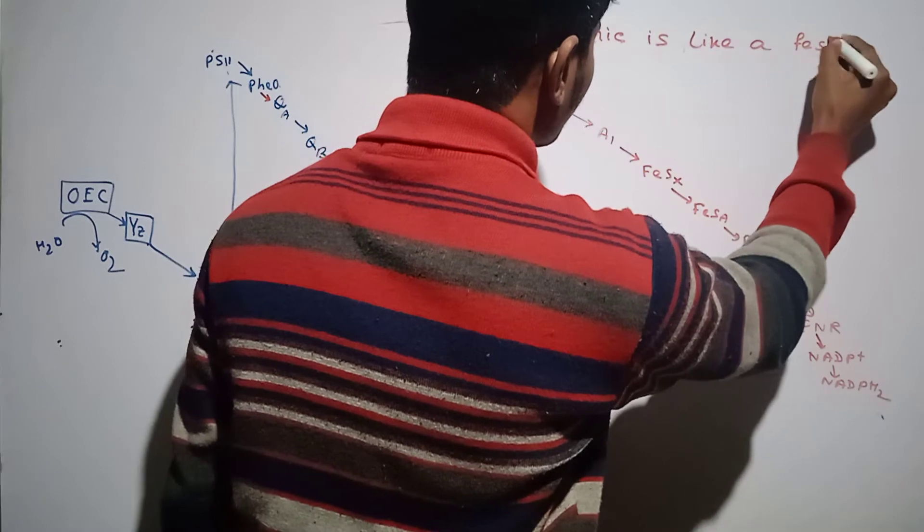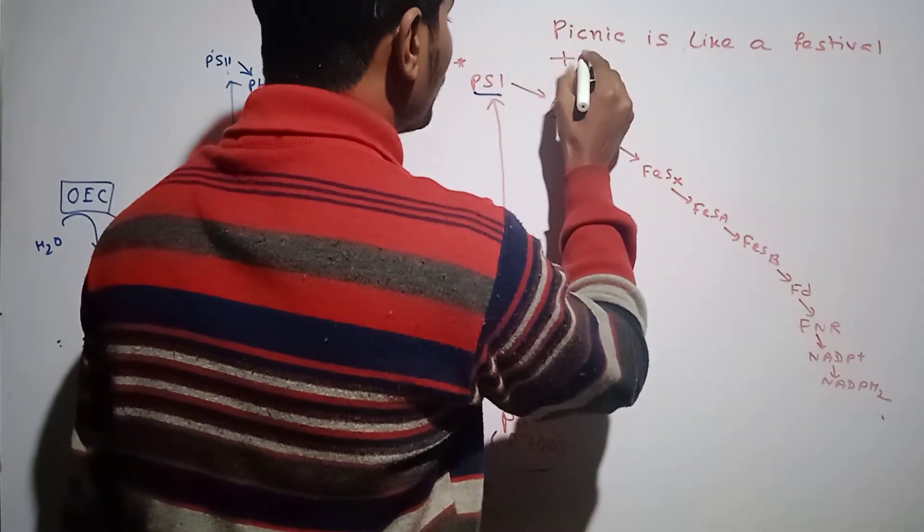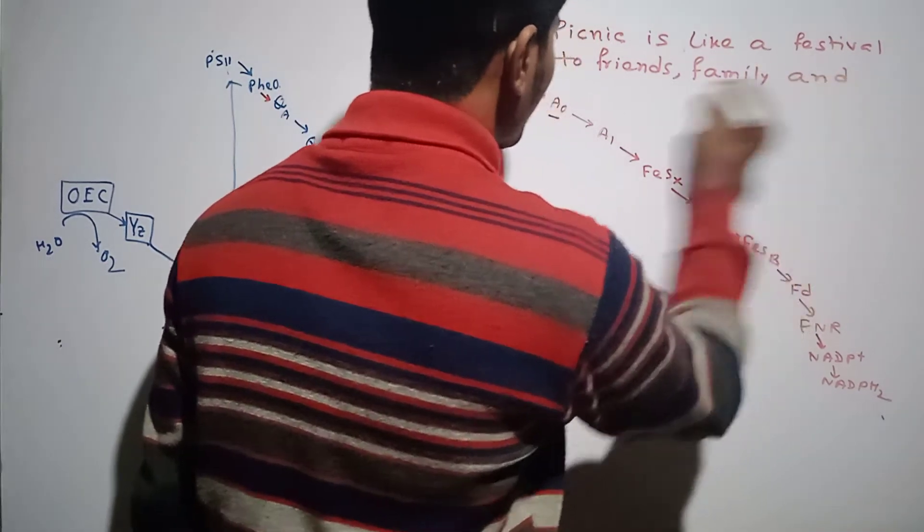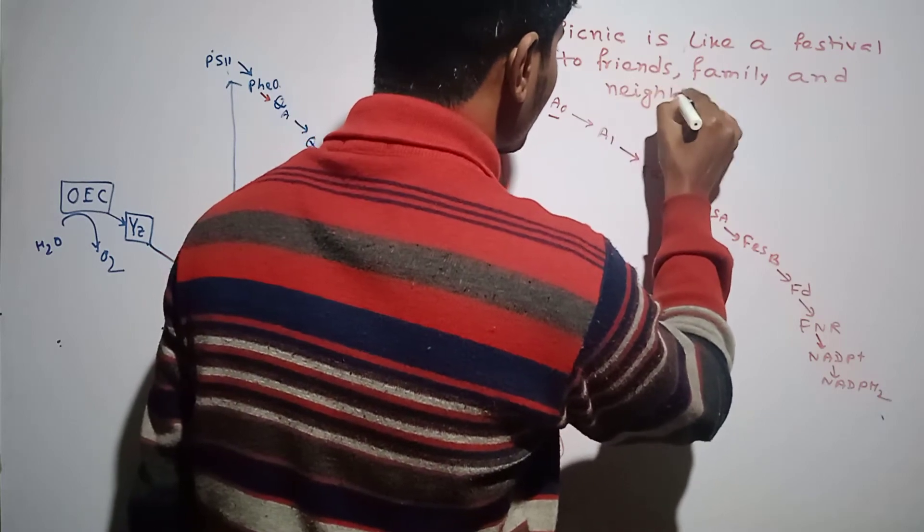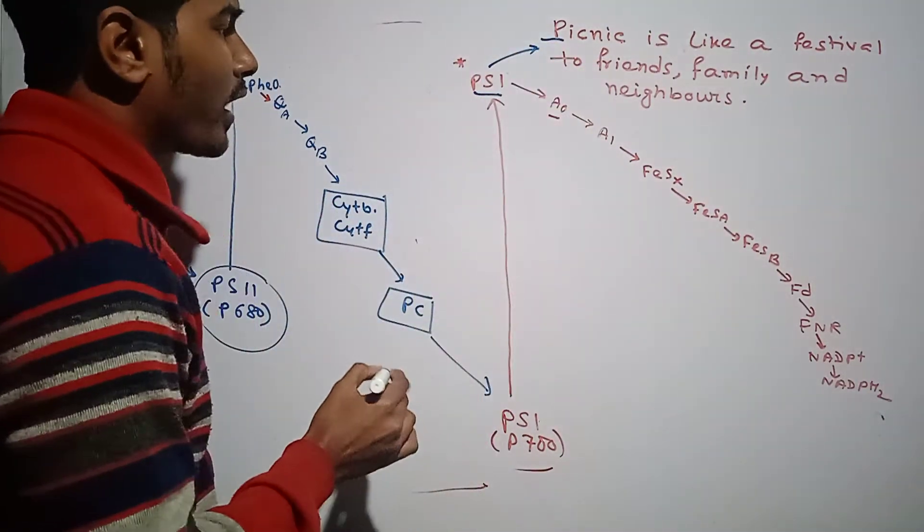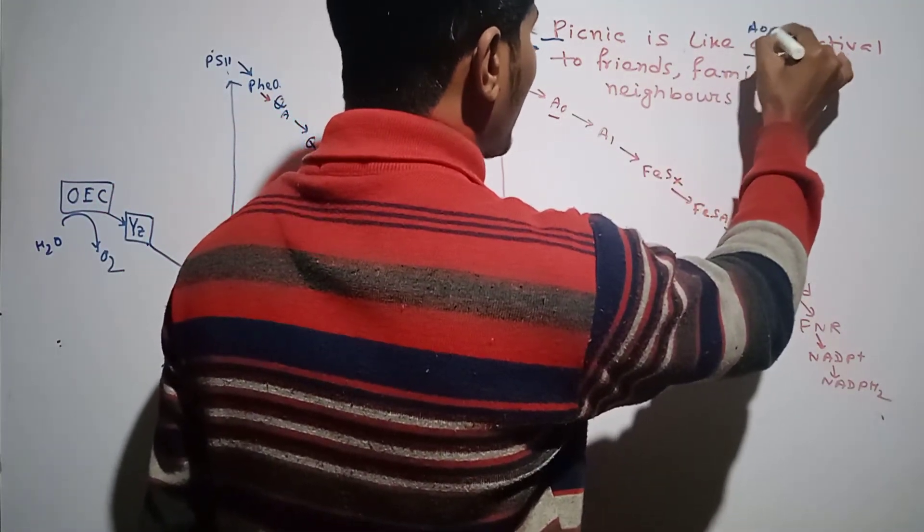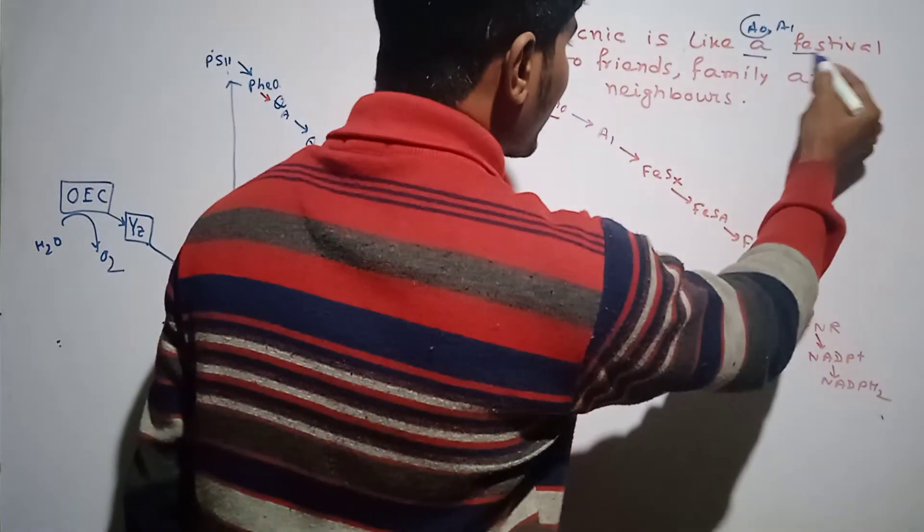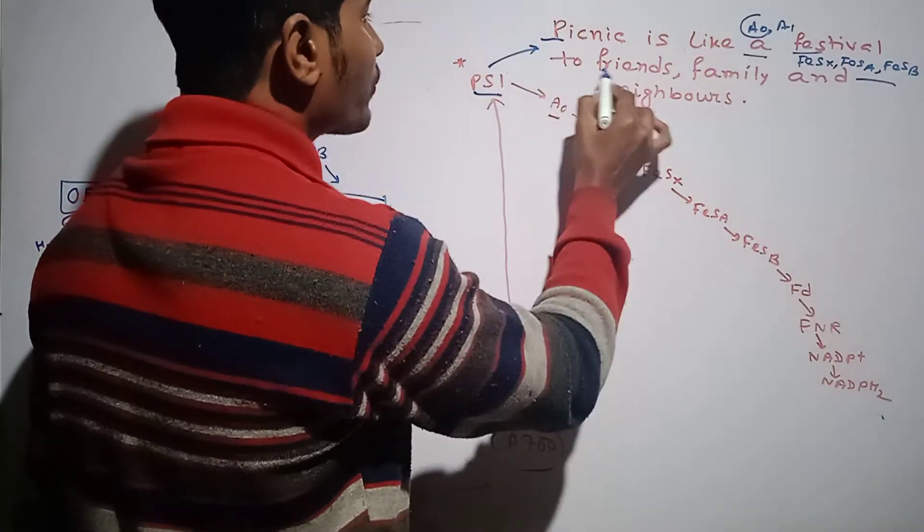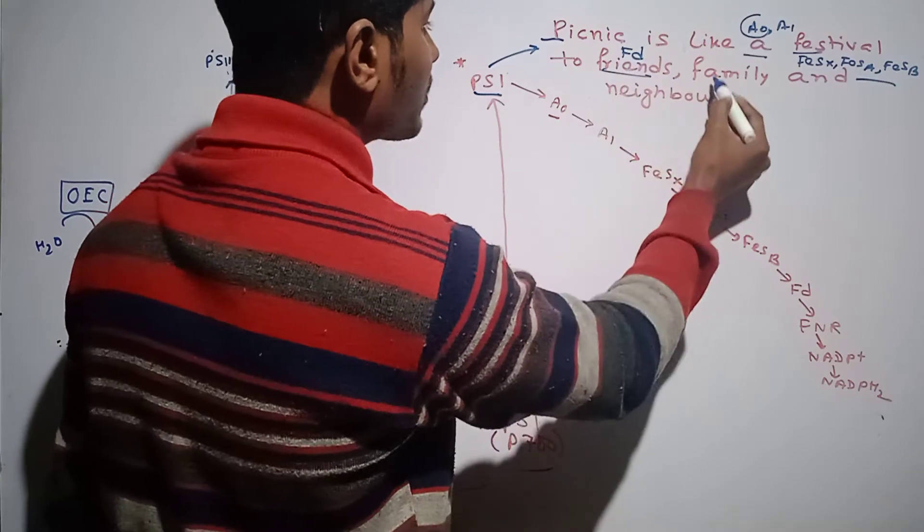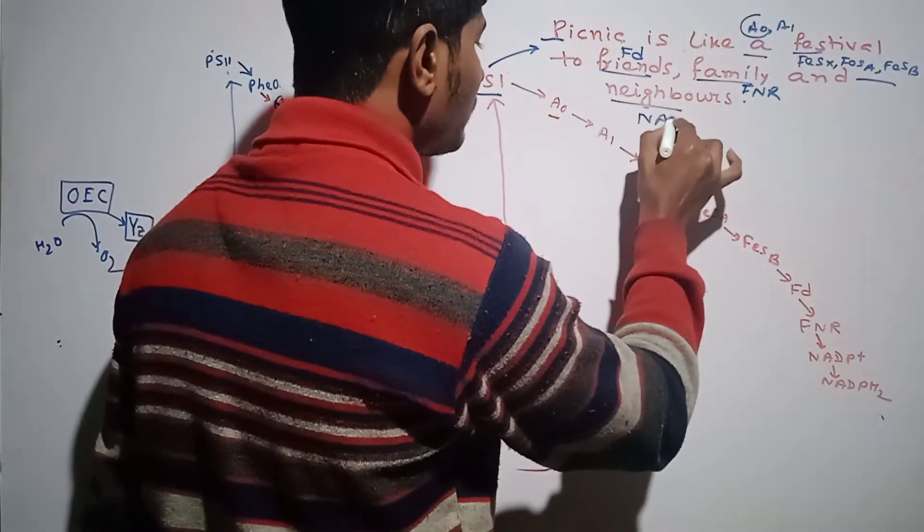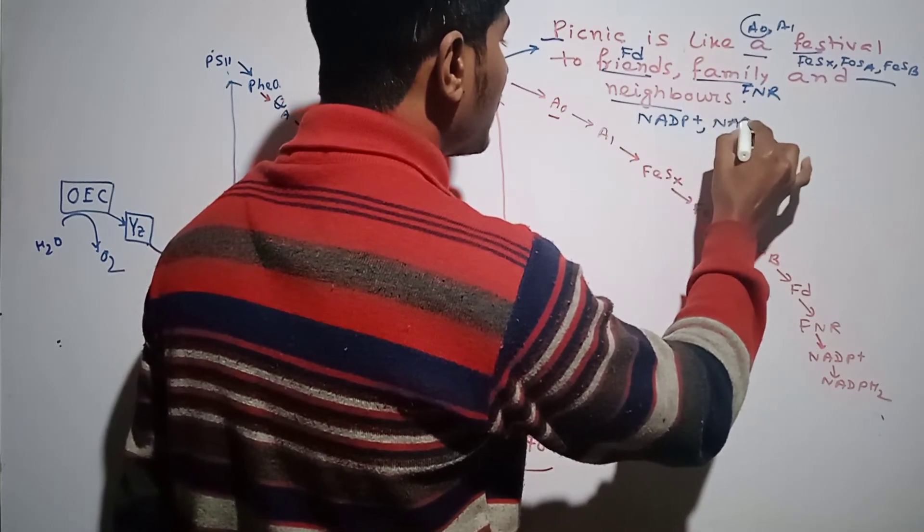Picnic is like a festival to friends, family, and neighbors. Picnic means Photosystem 1, then A0 and A1 (chlorophyll A and phylloquinone). Festival means FeS—you have FeS-X, FeS-A, and FeS-B. After that, you have friends, which means ferredoxin (Fd). From ferredoxin we have family, that is FNR (ferredoxin NADP reductase). After that we have NADP, so neighbors means NADP+, and reduced NADP, which is NADPH2.